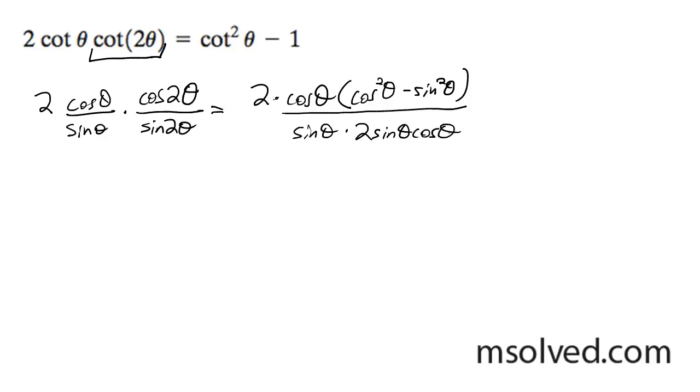Alright, so what we're going to do now is partly combine like terms. I'm going to rewrite this down here, so we get two cosine theta, cosine squared theta minus sine squared theta, all over two sine squared theta cosine theta.